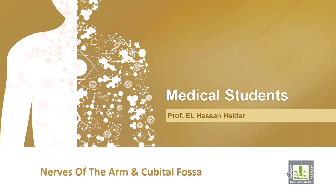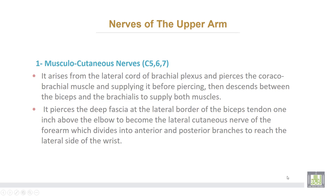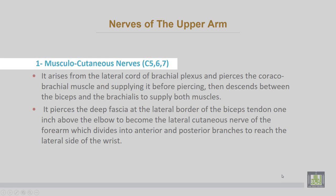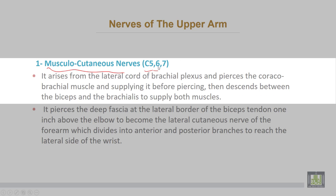Nerves of the arm and the cubital fossa. The first nerve is the musculocutaneous nerve, arising from cervical 5, 6, and 7. It arises from the lateral cord of the brachial plexus and pierces the coracobrachialis muscle, supplying it, before descending between the biceps and brachialis muscles to supply both biceps and brachialis, in addition to the coracobrachialis muscle.